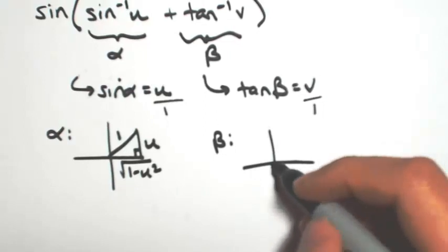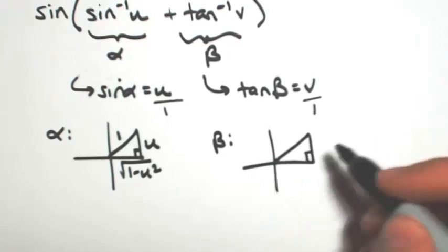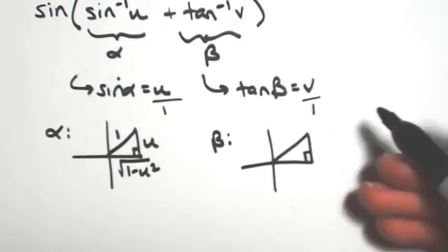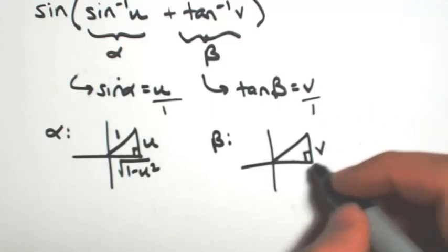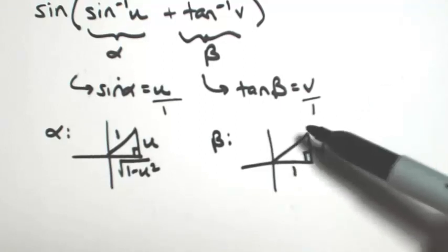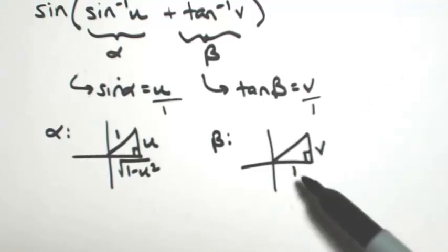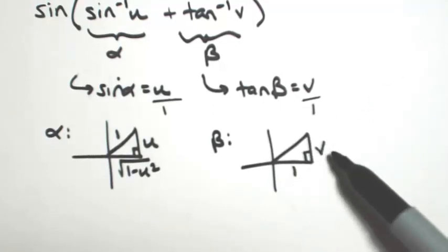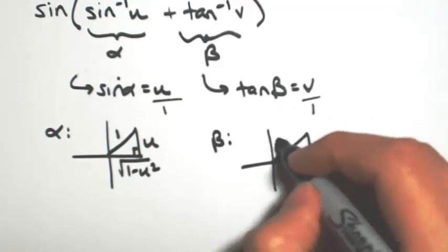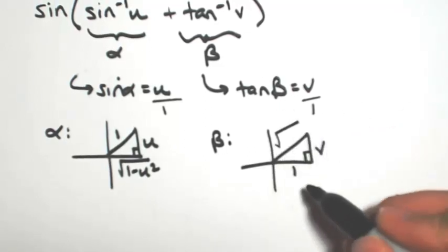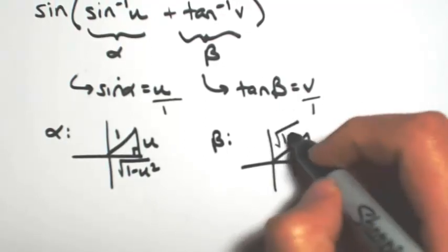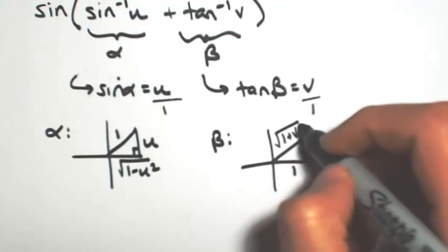For beta, it's kind of the same idea, but this time it's tangent, so opposite over adjacent. To figure out the missing side, it would be 1 squared plus v squared equals the missing side squared, so the hypotenuse is the square root of 1 plus v squared.